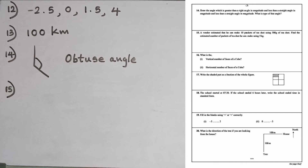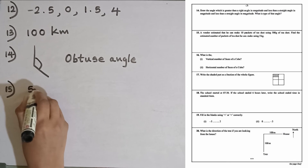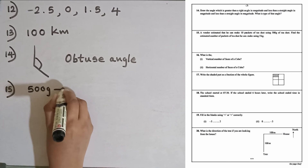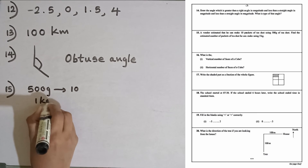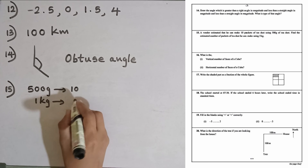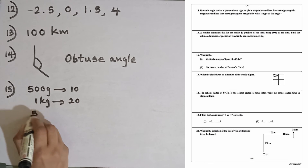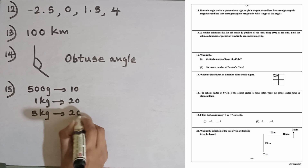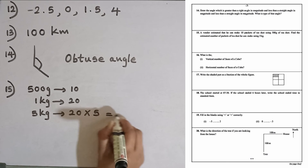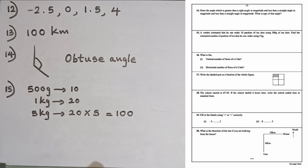Question number fifteen: a vendor estimated that he can make 10 packets of tea dust using 500 grams of tea dust. Find the estimated number of packets he can make using 5 kilograms. From 500 grams he can make 10 packets. For 1 kilogram, that is twice of this: 10 multiplied by 2 is 20. For 5 kilograms: 20 multiplied by 5 is 100. So the estimated number of packets is 100.